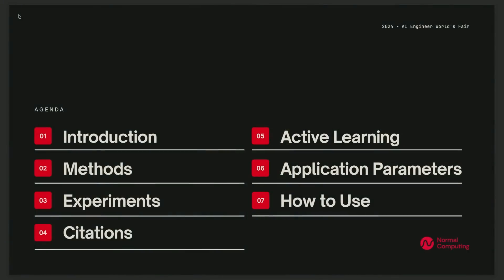Just to briefly cover what we're going to go over in today's talk: we'll introduce the problem, then dive into the methods — what is the retrieval mechanism that extended mind transformers implement — and then some experiments which give us confidence that these methods are actually performant. After that, we'll get into two of my favorite features: a new kind of citation, as well as a new kind of generation paradigm which is active learning inspired. Then we'll go over the most important parameters to tune when implementing EMTs in your applications.